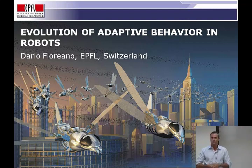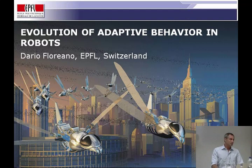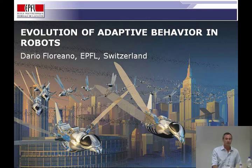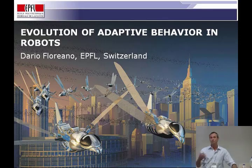Instead of focusing on one or two specific examples of robots that may have evolved relatively complex cognitive functions, I decided to show many cases of robots that we have been evolving in the lab. Some of these cases are more sophisticated than others, and it's up to you to see how far we can go, and whether some of these robots may start to manifest some of the ingredients necessary for the evolution of consciousness. My stand is that nothing makes sense except in the light of evolution.